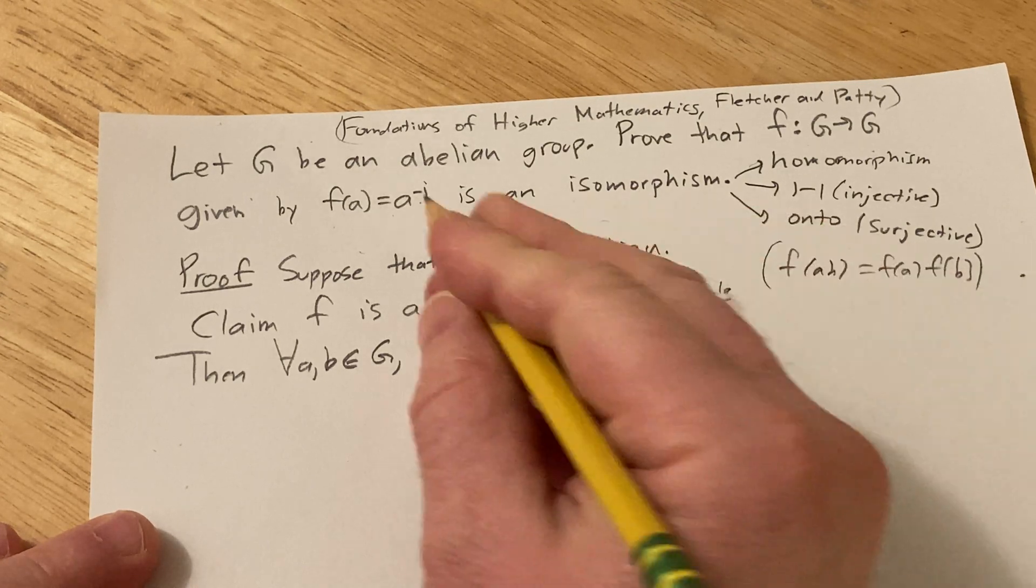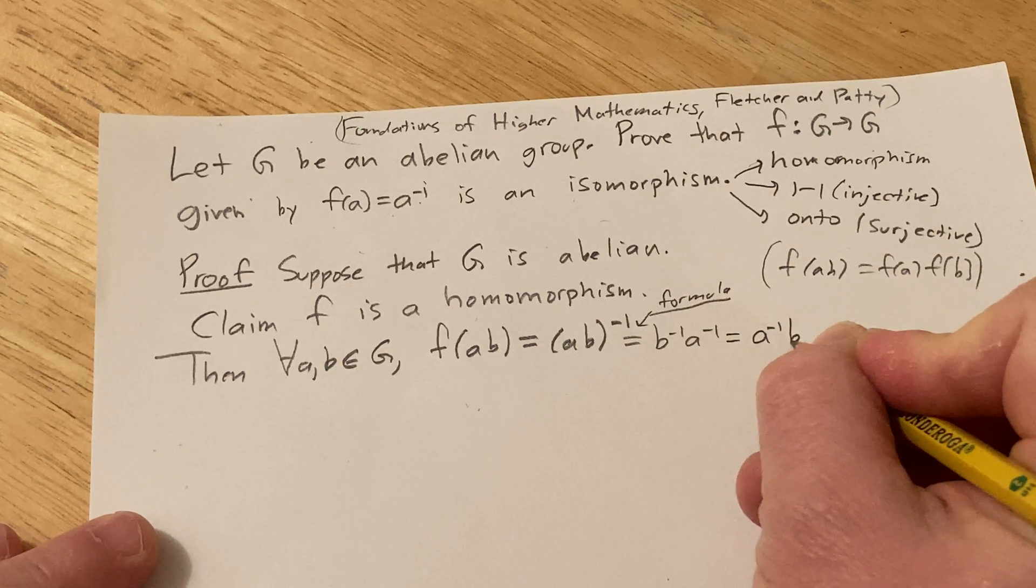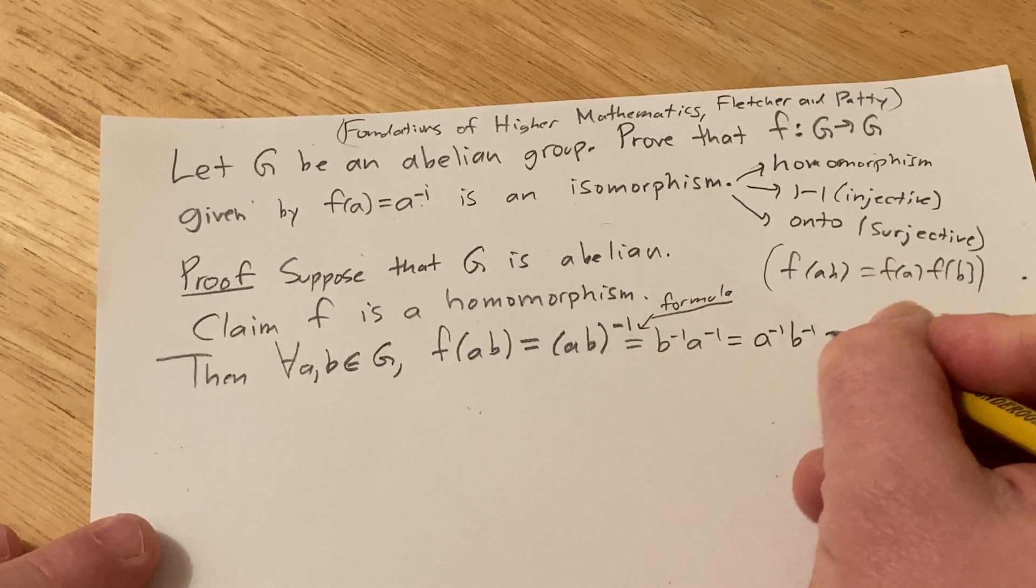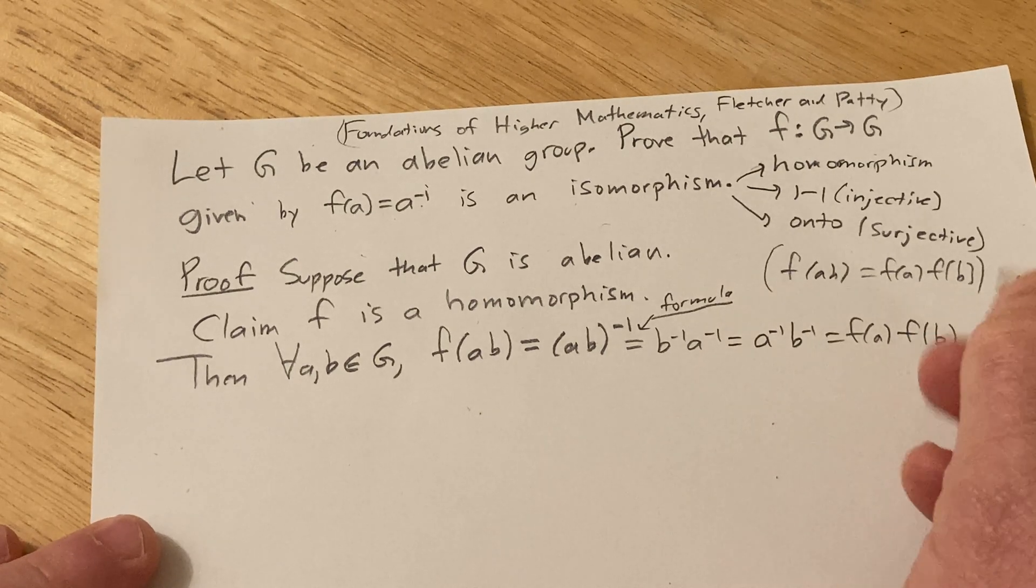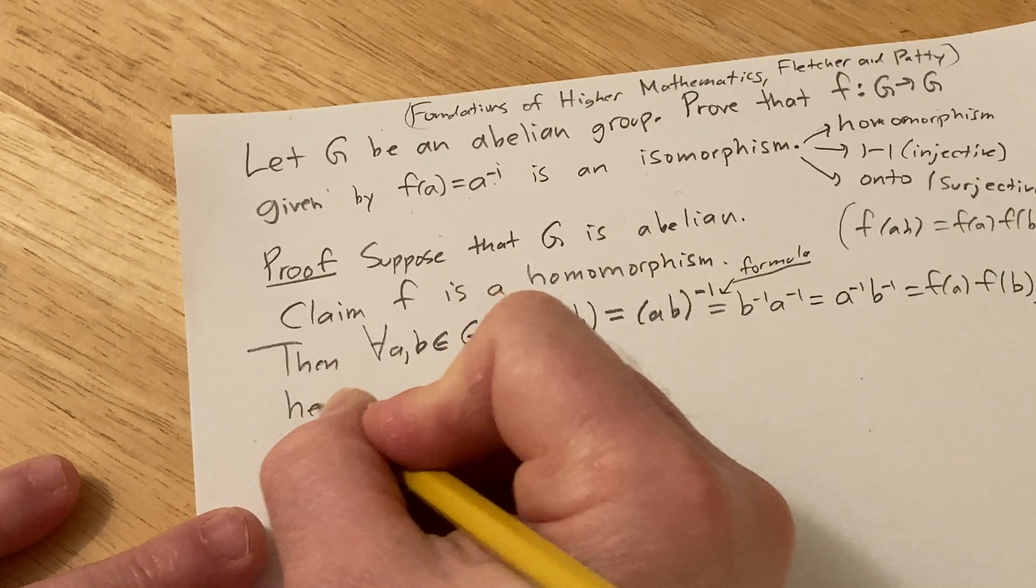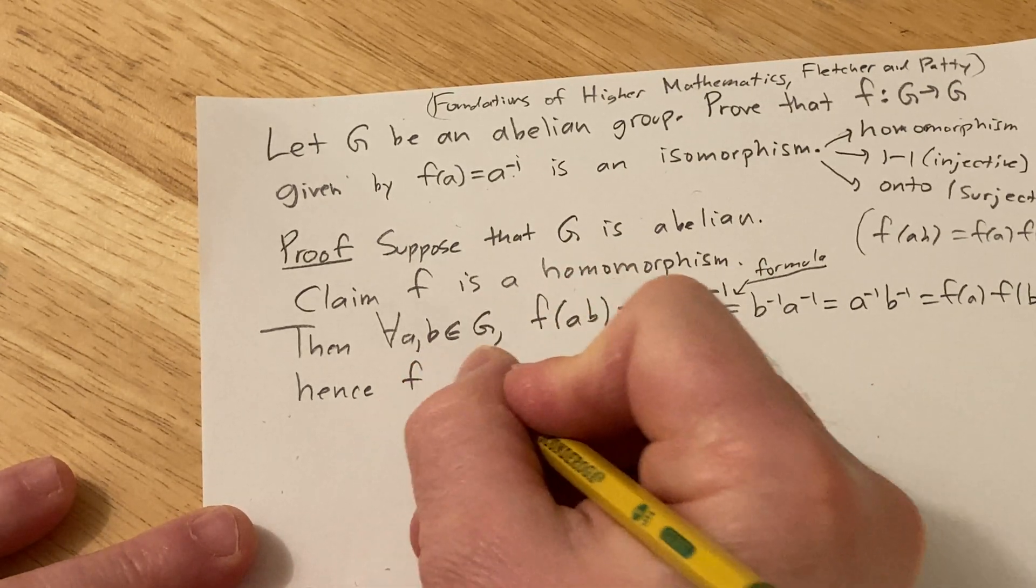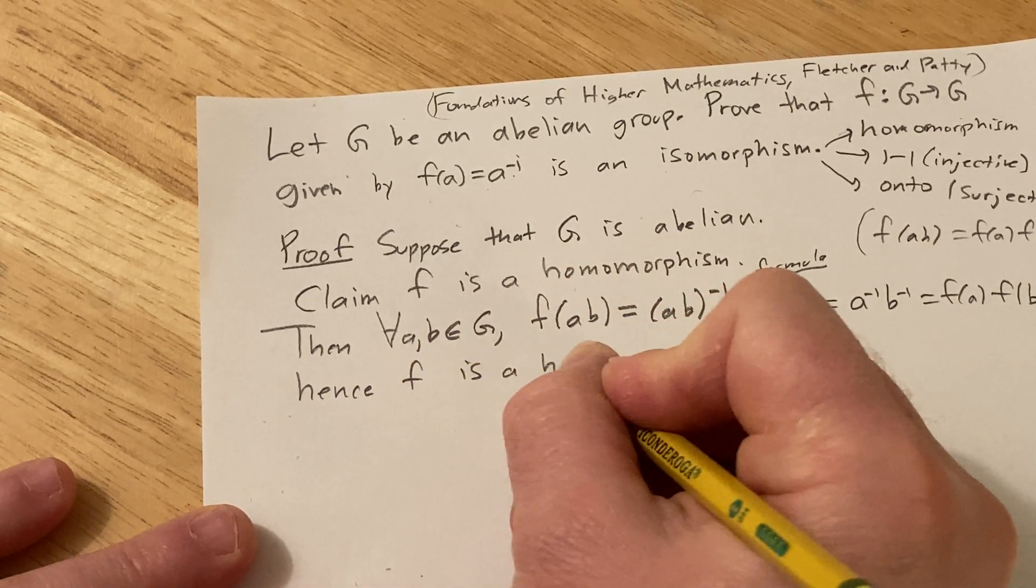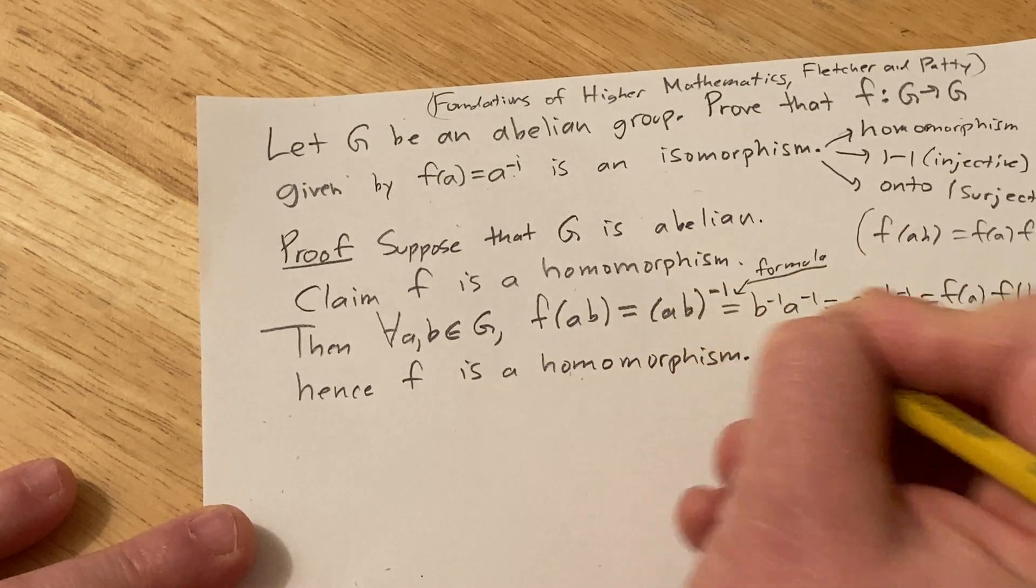And oh, G is abelian, so these commute. That's what it means to be abelian. So this is a inverse b inverse. Oh but wait, that's f(a) and that's f(b). Boom, we're done. Hence, f is a homomorphism. Cool, that worked out really nice.